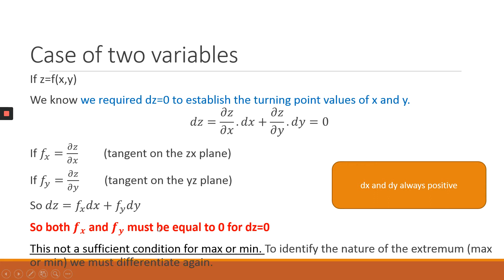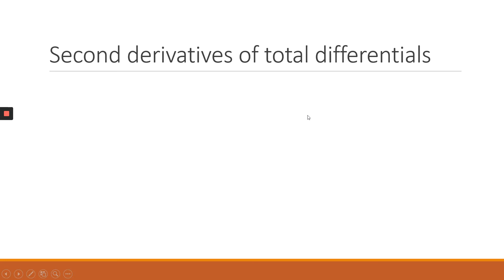Since dx and dy are always non-zero constants, for dz to equal zero, f_x and f_y must both equal zero. Solving the partial derivative of z with respect to x equal to zero gives the x turning point value; the same applies for y. Finding the first derivative alone is not a sufficient condition — we also need the second derivative to define the nature of the extremums. It's easier to demonstrate this through an example: let z = x³ + 5xy − y².